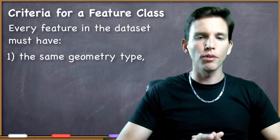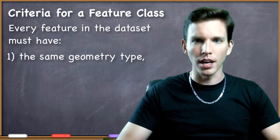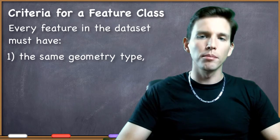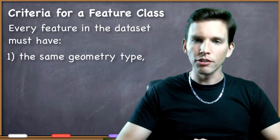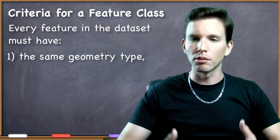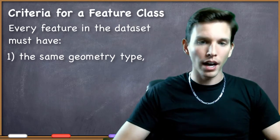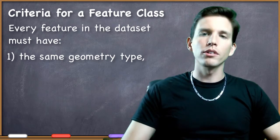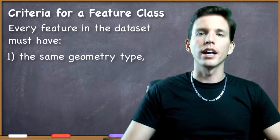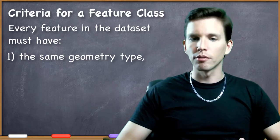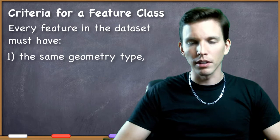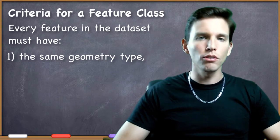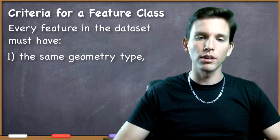Every feature in the file must be represented as a point, for example, in order for it to be a feature class. Likewise, they would all have to be lines, or all areas, or all volumes. You're not permitted to mix and match different geometry types. If you need some features to be represented with one geometry and others with another, you'll need more than one vector data file. For instance, if you're representing roads as lines and fire hydrants as points, you're going to have at least two different vector data files — at least two different feature classes.